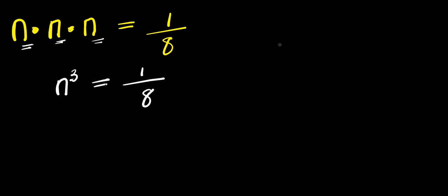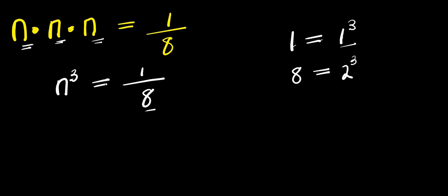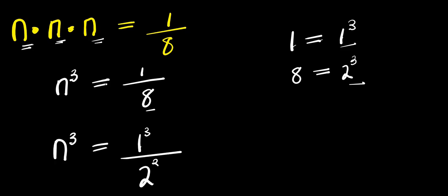Now if you have 1, I can simply express it as 1 to the power of 3. And also if you have 8, I can express it as 2 to the power of 3. So I'm going to replace the 1 with 1³ and the 8 with 2³, so my equation becomes n³ equals 1³ divided by 2³.